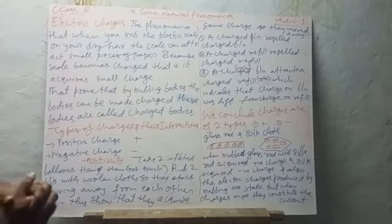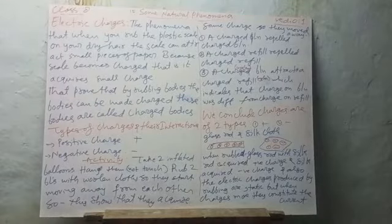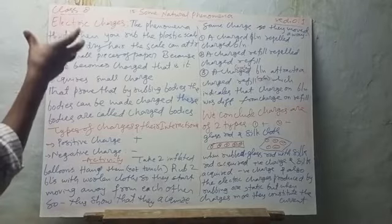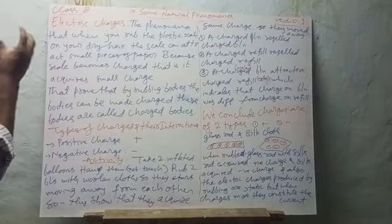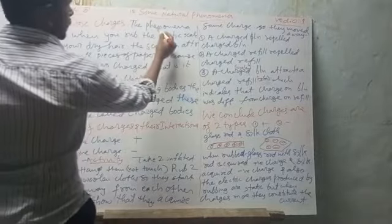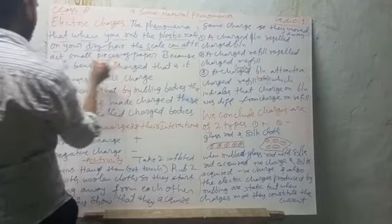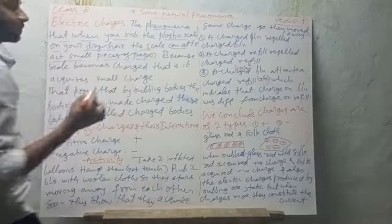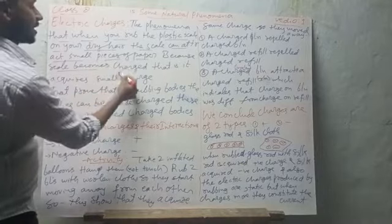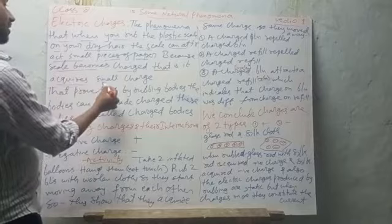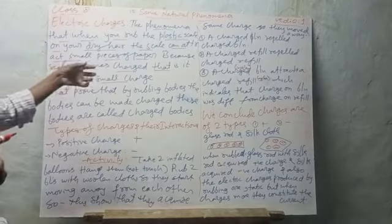What are electric charges? How many types of charges are there? These are important questions. The phenomena is that when you rub a plastic scale on your dry hair, the scale can attract small pieces of paper after rubbing, because the scale becomes charged — that is, it acquires a small charge.